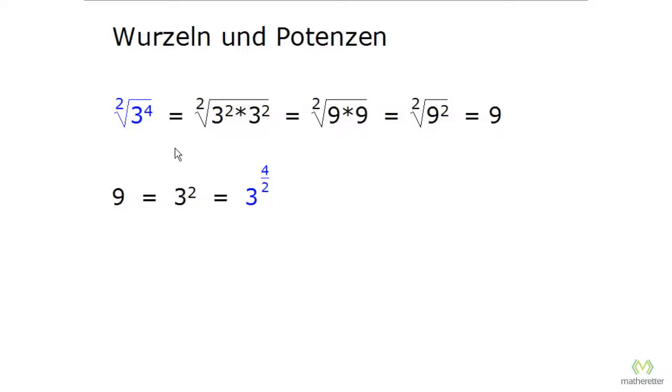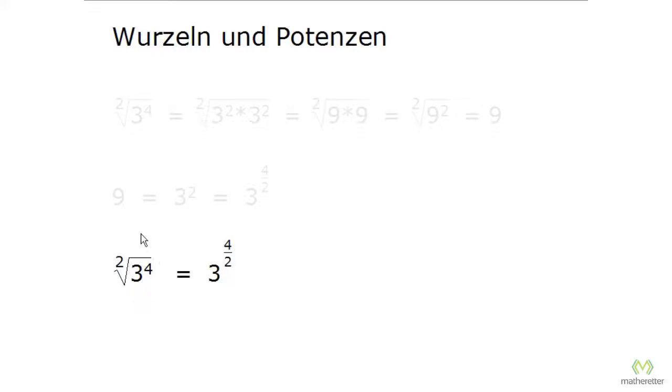Let's write both next to each other. Here we recognize a new rule. If we have the root, we write the radicand, the 3, as the base of the power. Then we take this 4 as an exponent, and we take this root exponent, the 2, as the denominator of the exponent. 4 goes up, 2 goes down in the fraction. That gives us 3 to the 4 halves.